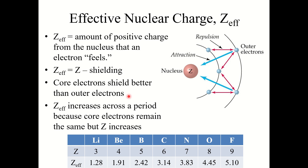When we talk about effective charge, we are talking about the amount of positive charge from the nucleus that an electron feels. A core electron that's really close to the nucleus is going to feel the pull from the protons very strongly — much more strongly than an outer electron would — because an outer electron is repulsed by those inner electrons and also feels some shielding.